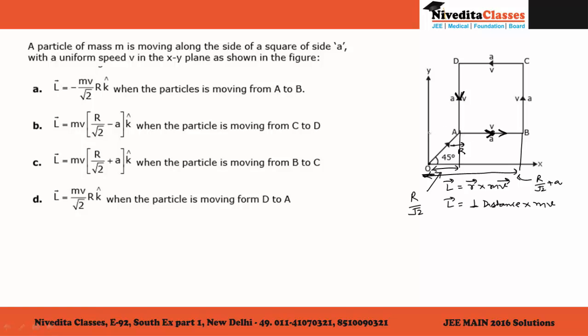When it is going from A to B, the perpendicular distance will be R divided by root 2. And when coming from C to D, the perpendicular distance will be equal to R divided by root 2 plus A.